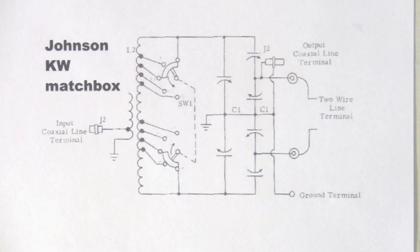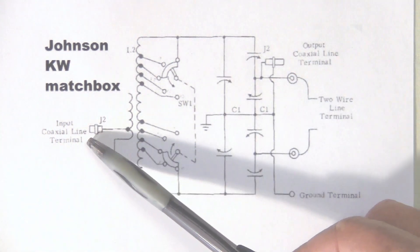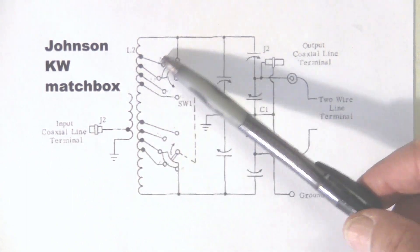This is the Johnson Kilowatt Matchbox Antenna Tuner schematic diagram. This is about a 50 or 60 year old or perhaps even older than that design.